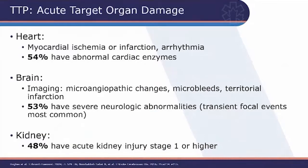Looking at acute target organ damage in TTP, the majority of patients have heart involvement as marked by abnormal cardiac enzymes. About half have severe neurological abnormalities — though these range from headache to transient focal events to coma. Less than 50 percent have some kidney involvement, although it's usually a very mild abnormality in patients with TTP.